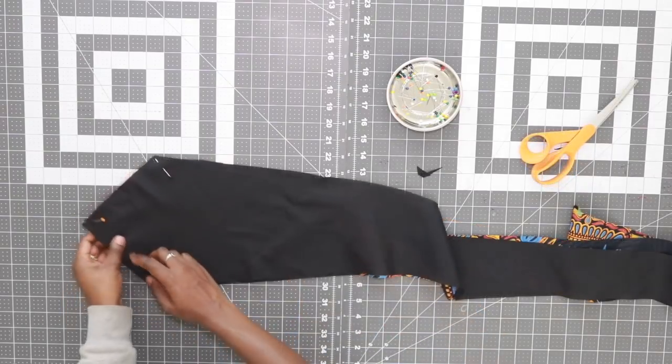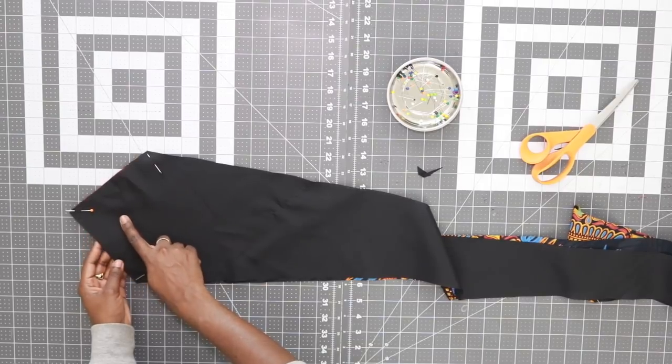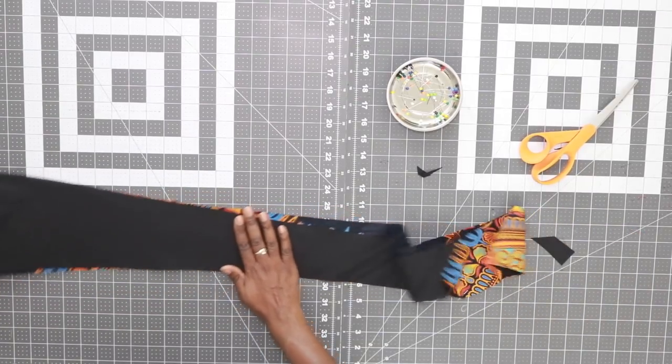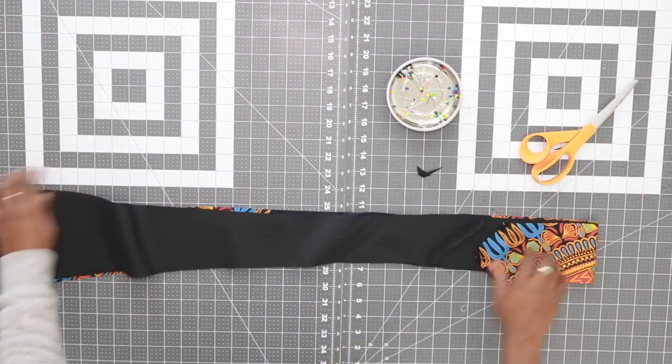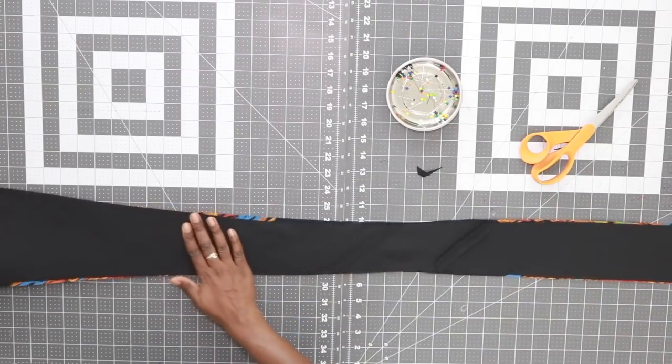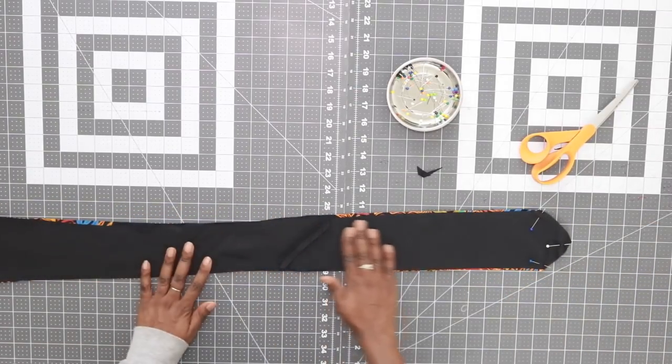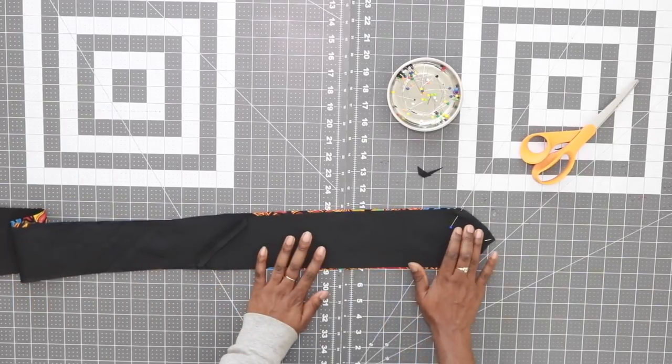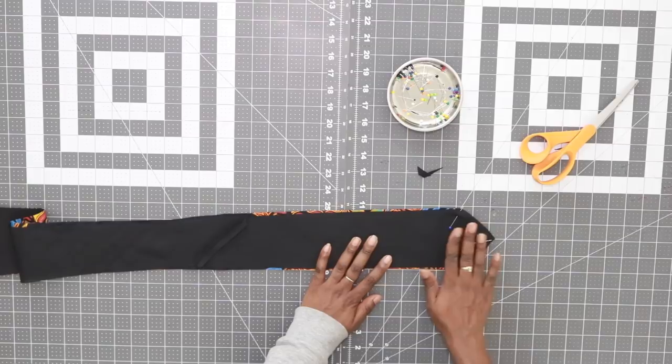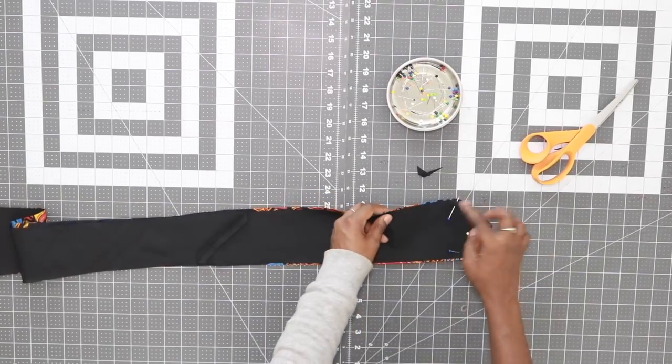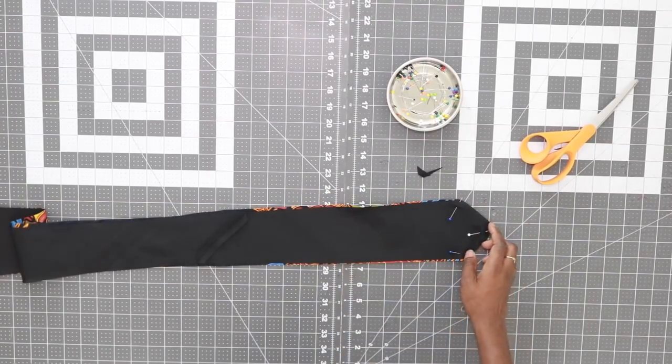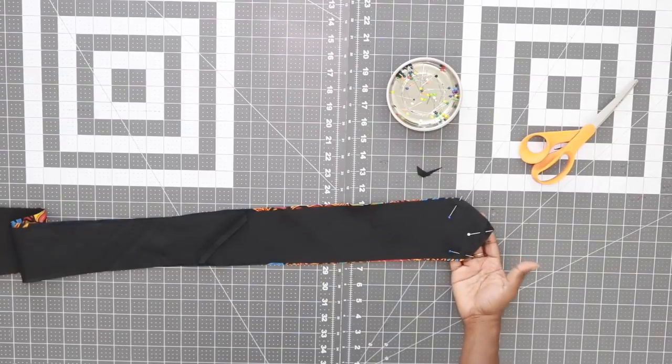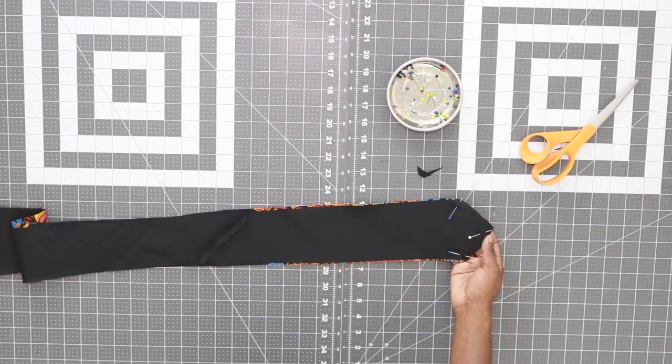Quick tip: pin at one end first, then smooth everything out before pinning the other side. Because if anything extends farther, you want to even it out. You'll want to even it out before sewing it together.